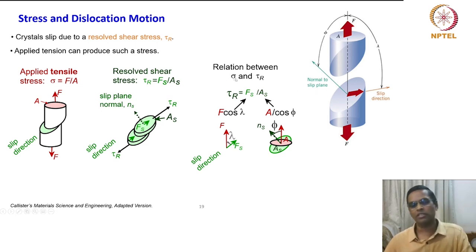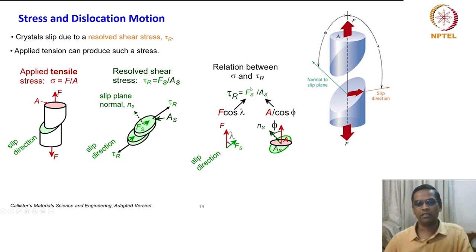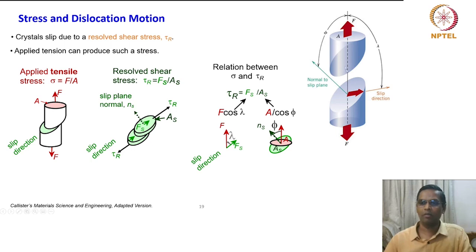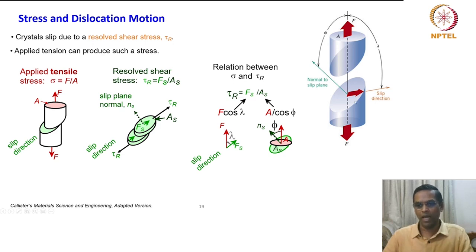Coming back to the relation between sigma and tau_r: tau_r equals Fs, the shear force, divided by the area of the plane where the shear force is experienced. Fs equals F times cos lambda — the component of force contributing in the slip direction. The component contributing to the slip plane is F cos lambda.